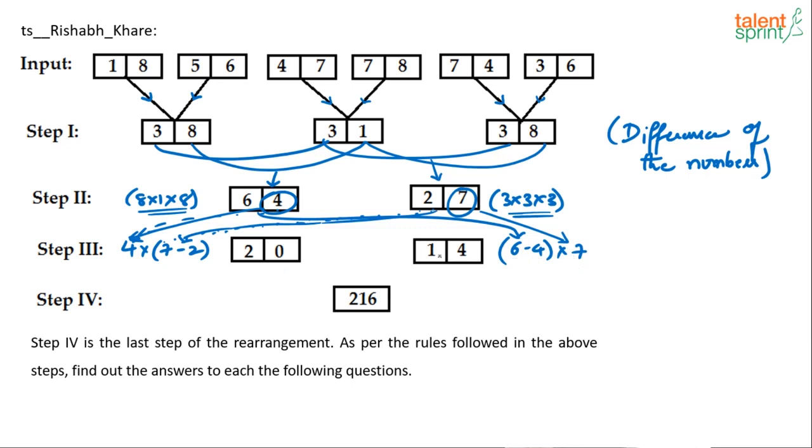And the last step: 20 and 14 is given as 216. It's actually (20-14) whole cube. So 20 minus 14, you know where the numbers are coming from. Simple difference of the two numbers cubed. 6 cube is 216. So that's the process behind this whole arrangement.